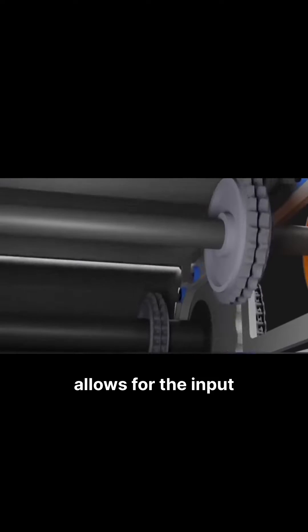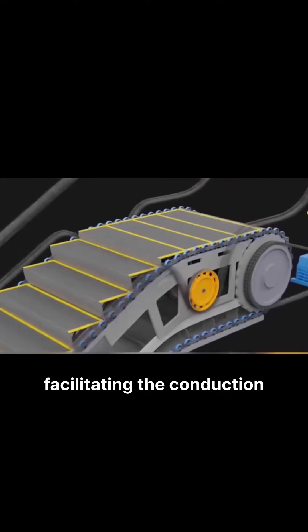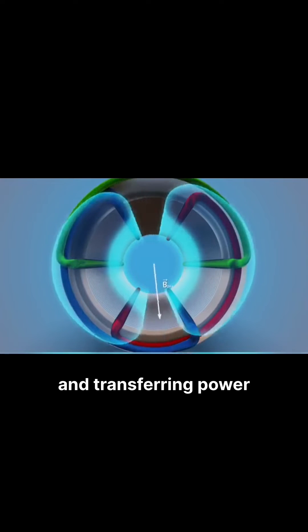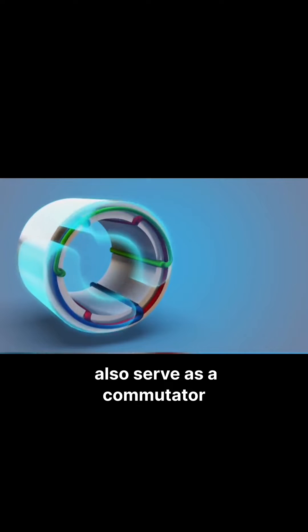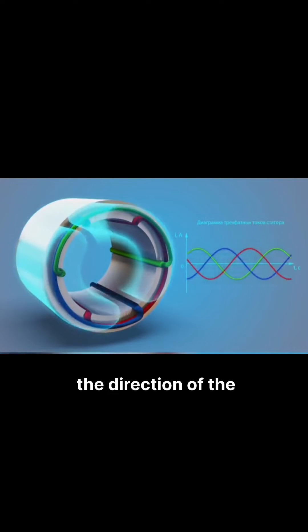The brush allows for the input and output of electric current, facilitating conduction and power transfer. In some motors, it can also serve as a commutator, effectively changing the direction of the current.